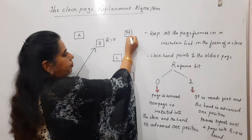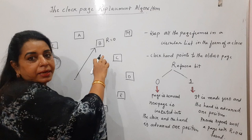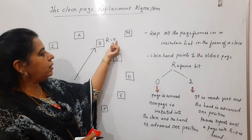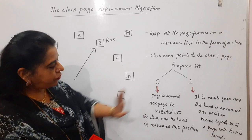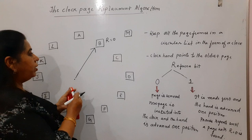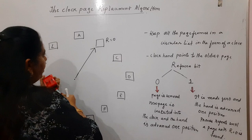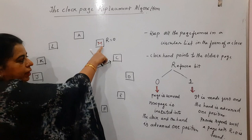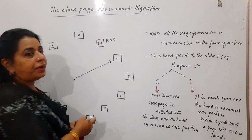Assume there are pages from A to L. The CPU is demanding page M, which has to come into main memory. But which page will you replace? Replace the oldest page, since the clock hand is pointing to it. Check the reference bit for that oldest page — if it is zero, replace page B with M. The new page is inserted into the clock and the hand is advanced by one position. Now M is in place of B, and the hand points to the next page in circular fashion.